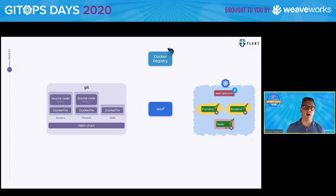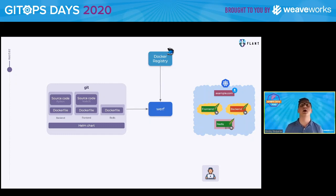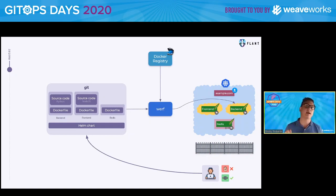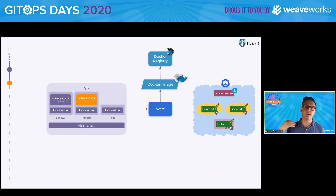If you rerun on the same commit as many times as you want, Werf will check the content of the registry, know that everything is okay, check the state of the cluster, and just exit with no change. If someone changes something in Kubernetes, on the next rerun Werf will detect it and fix it back, running on the same commit. If we add another commit that changes only the source code of the frontend, Werf builds one extra image, the other two remain the same, and only the one deployment that should change is changed.